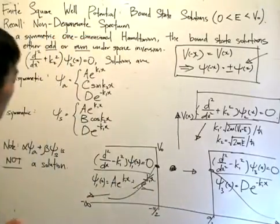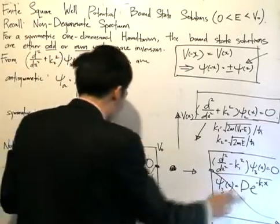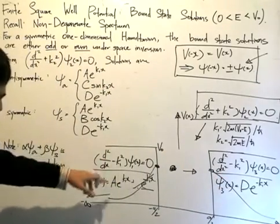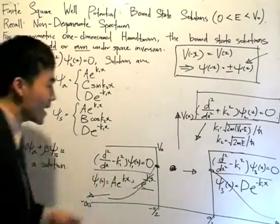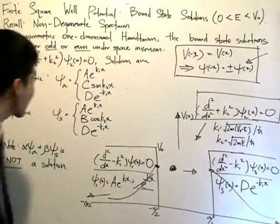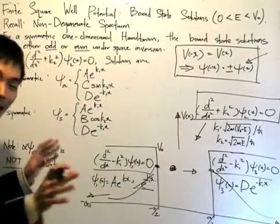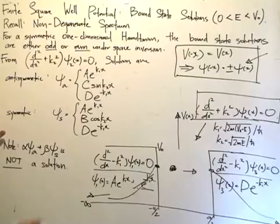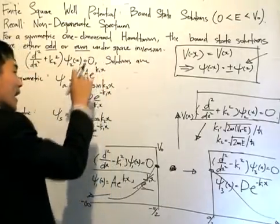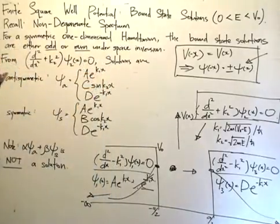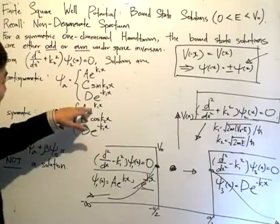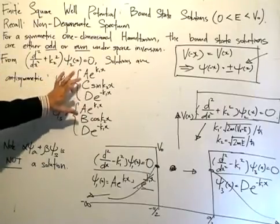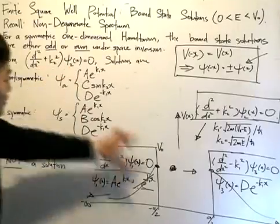The solutions outside the well — e^(k1x) and e^(-k1x) — stay the same for both the antisymmetric and symmetric solutions. As you can see, I have A multiplied by e^(k1x) and A multiplied by e^(-k1x), and they stay the same. The only difference is the solution to psi_2 inside the well.